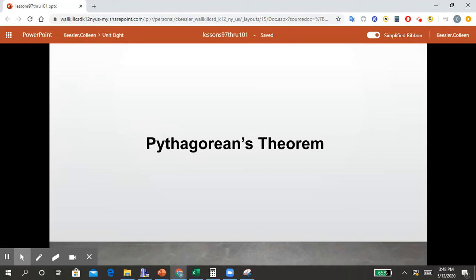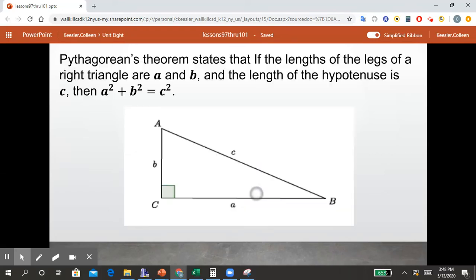Hi Math 8 students, today we're going to continue with Pythagorean's Theorem. Pythagorean's Theorem states that if the lengths of the legs of a right triangle are A and B and the length of the hypotenuse is C, then A squared plus B squared equals C squared.